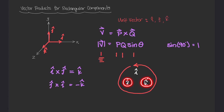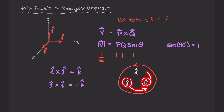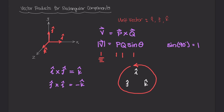We can use this trick for any two unit vectors. For k cross j, we go from k to j to get i, but those arrows go against the counterclockwise arrow, so k cross j equals negative i. For j cross k, we go in the same direction as the arrow — counterclockwise — so j cross k equals positive i.